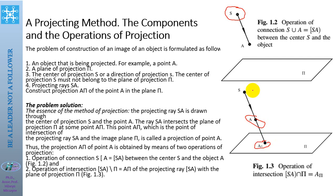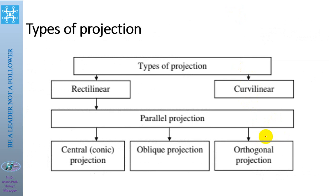These lines are called projection lines or projection rays. There are different types of projections: rectilinear projections and collinear projections. The mainly used are rectilinear projections, which are parallel projections. There are three types of parallel projections: central projections (also called conic projections), oblique projections (also called parallel projections), and orthogonal projections, which is the projection at the right angle.